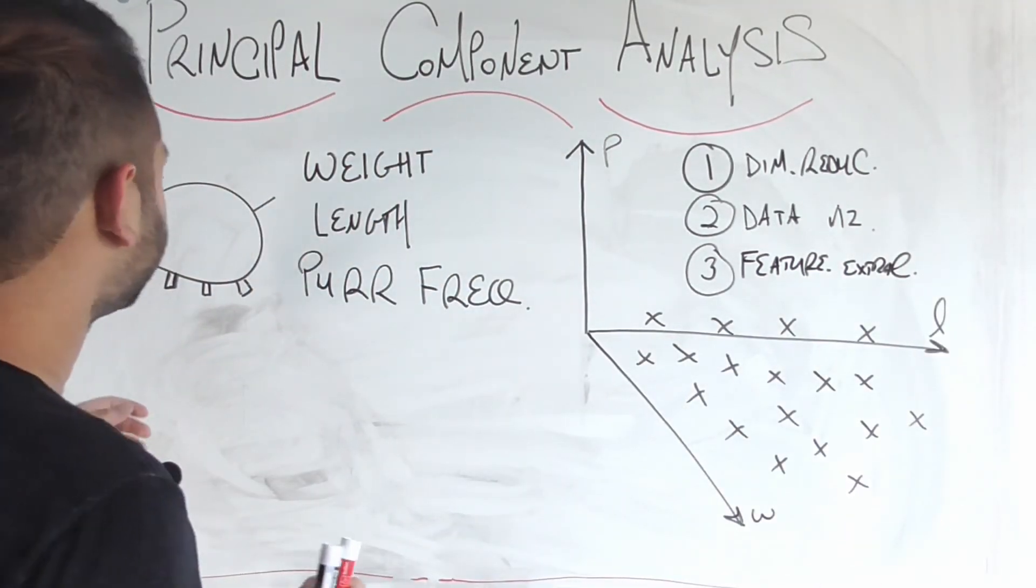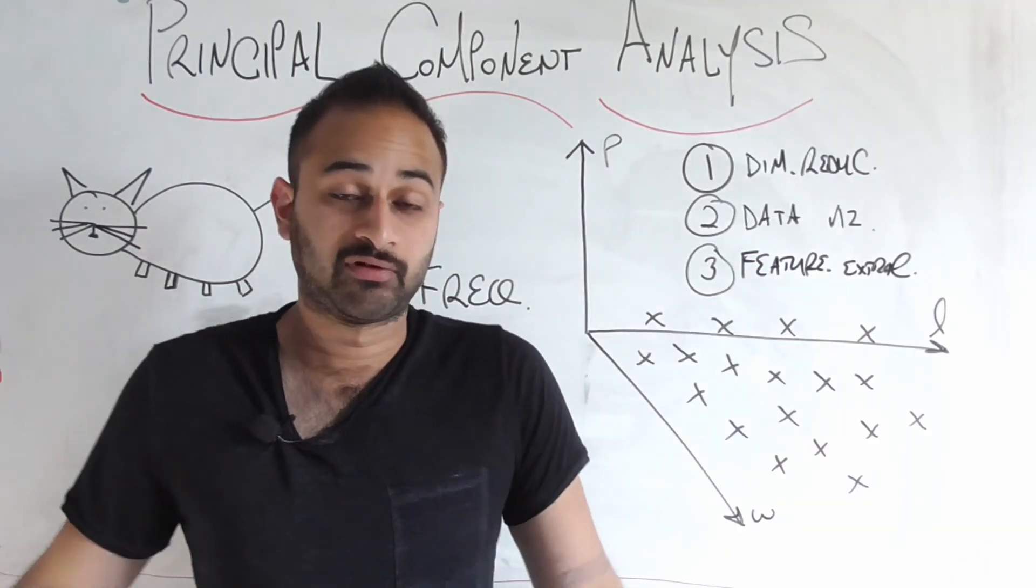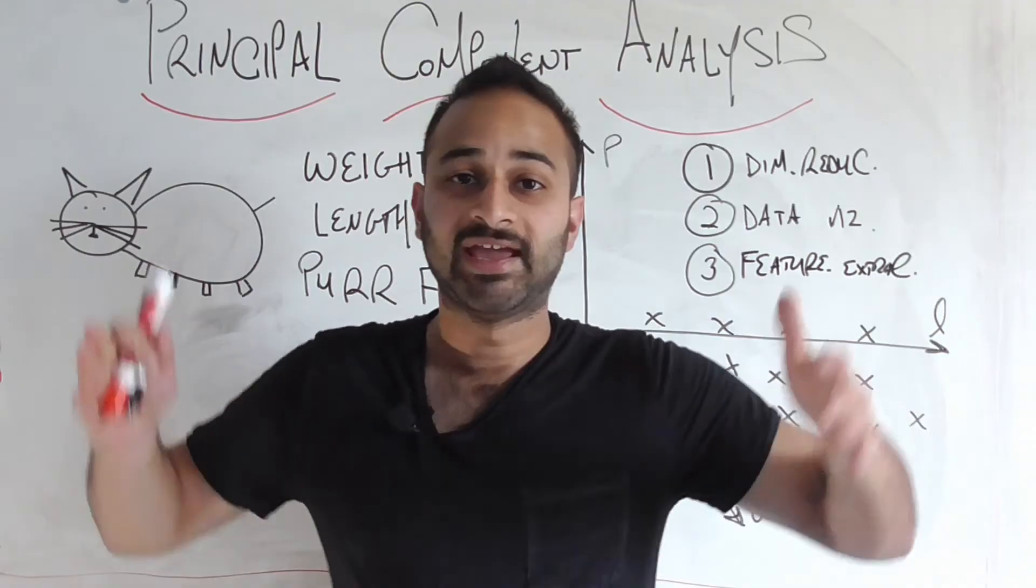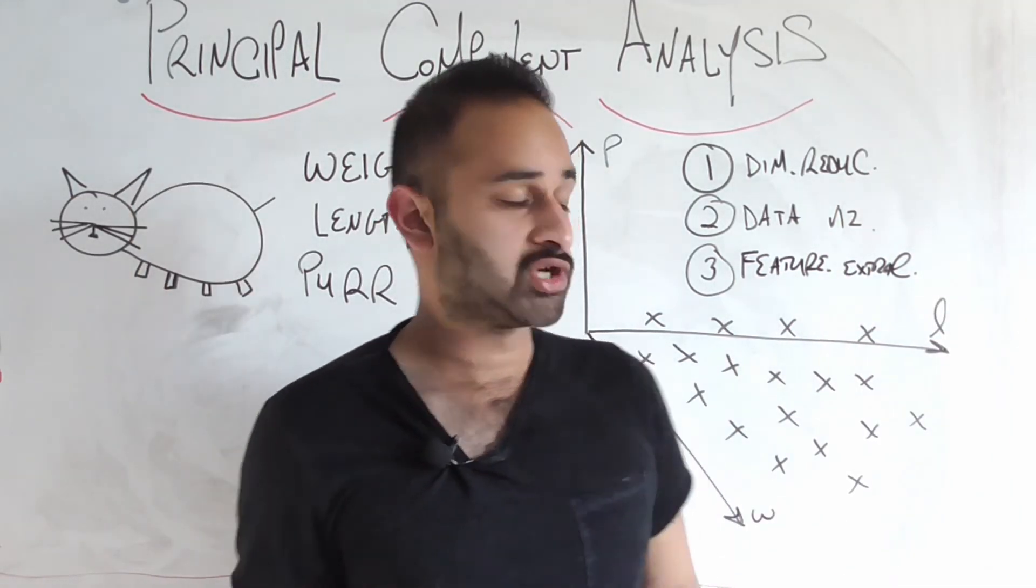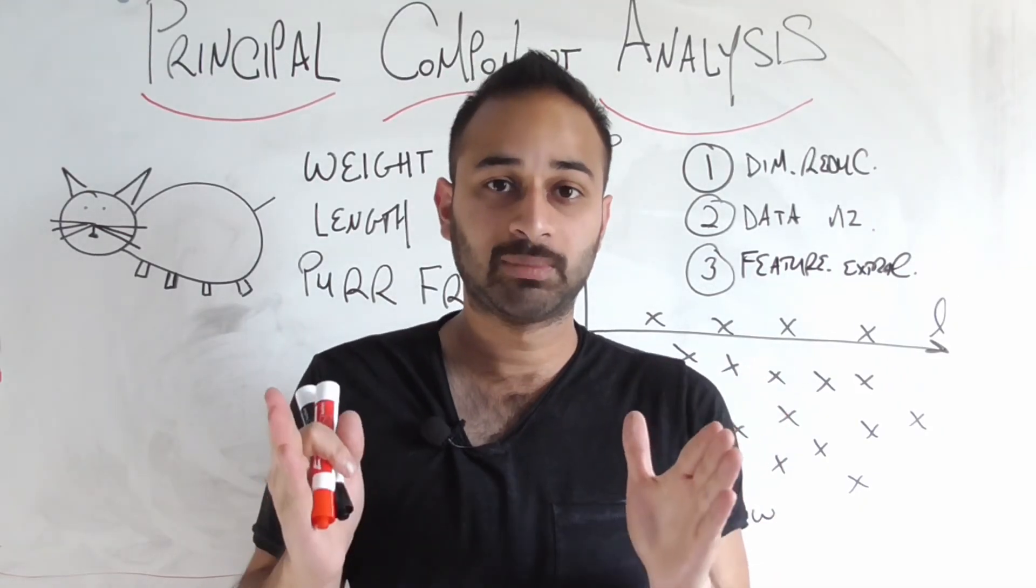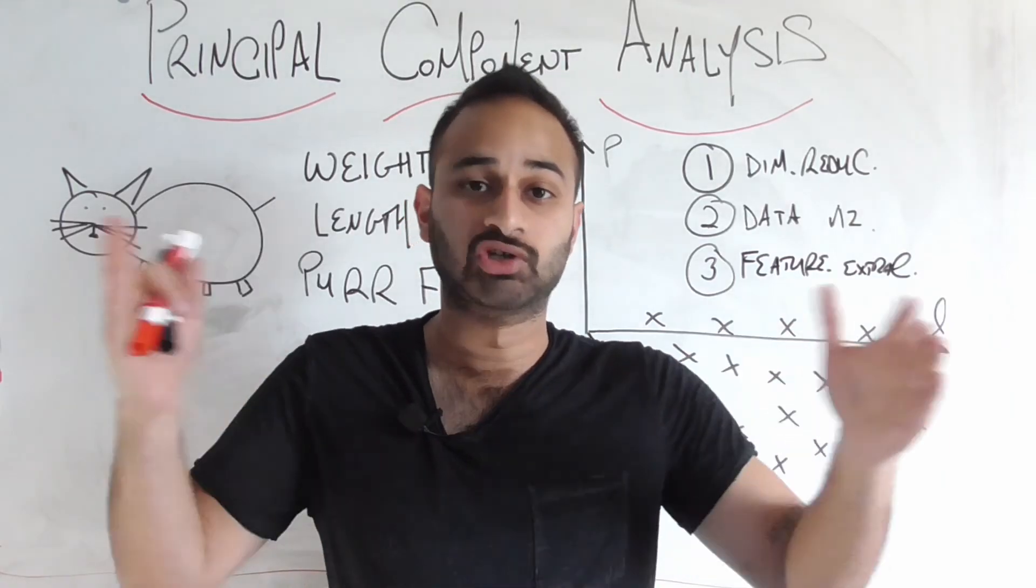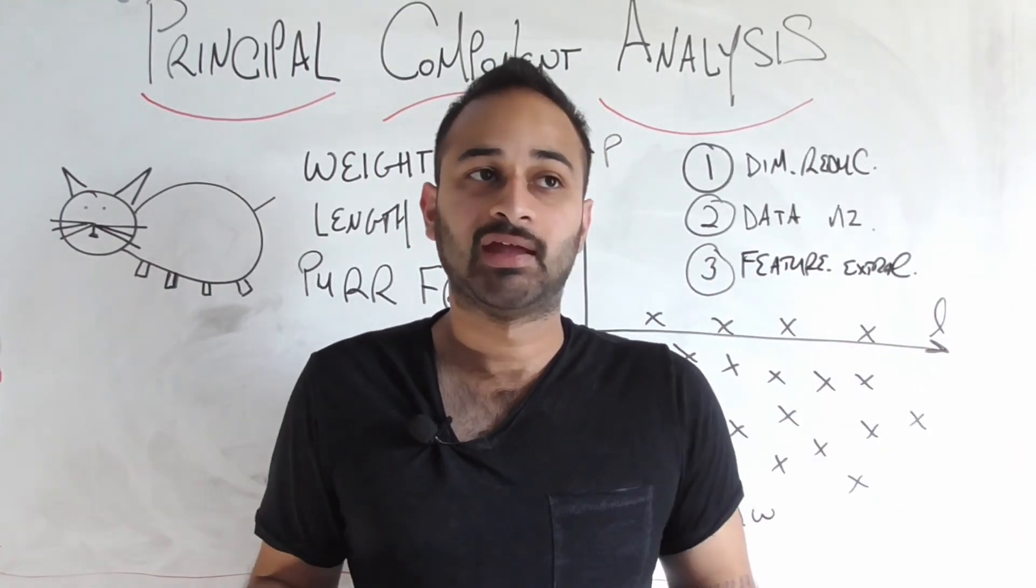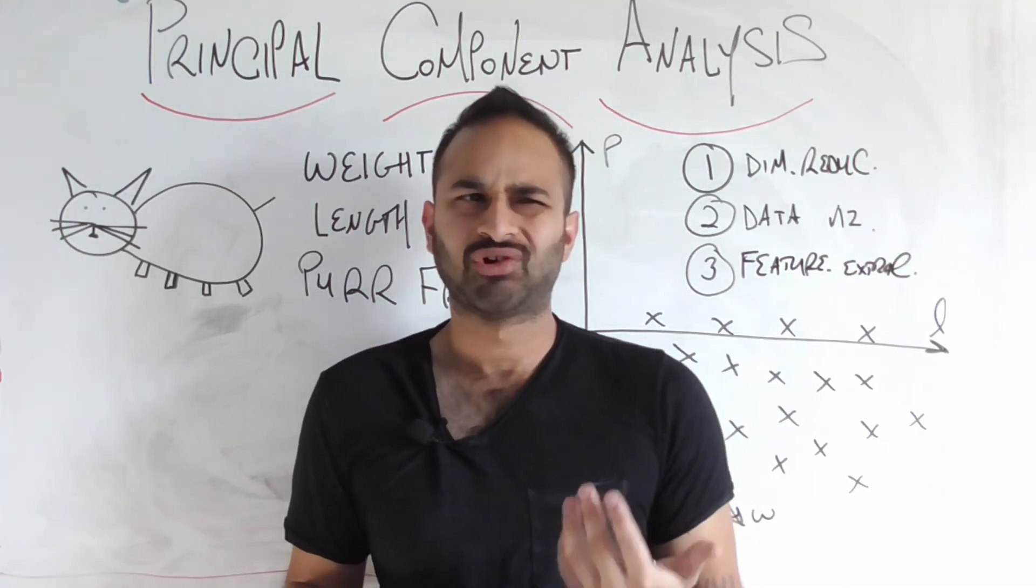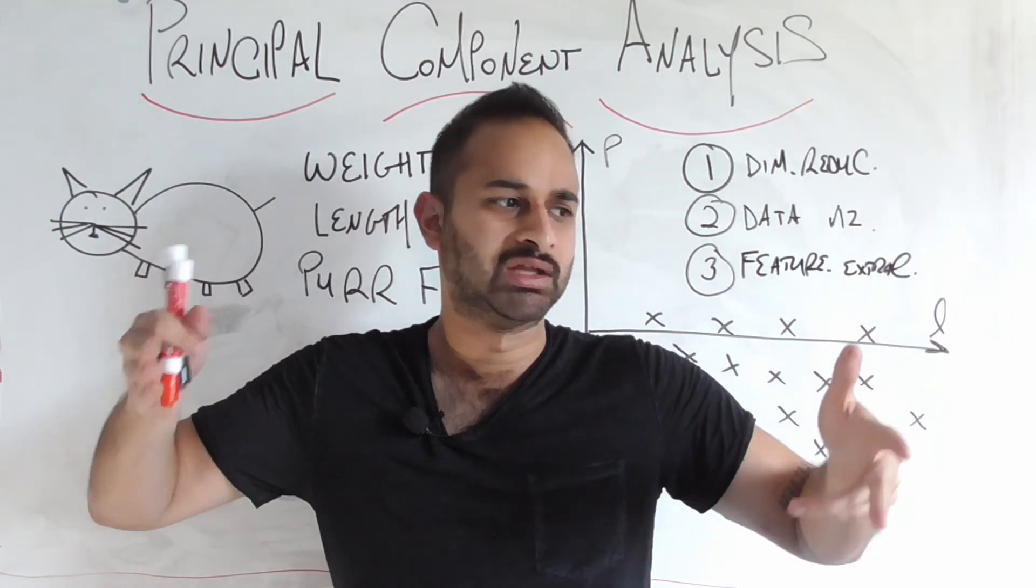So that's kind of the crux of what principal component analysis is. That's really it for this video. It takes a high dimensional space and applies various transformations onto it to get it to a lower dimensional space such that this lower dimensional space still captures as much of the dynamics in the original space as we can. And that transformation will be more clear in the next video when we talk about how do we actually go about transforming a high dimensional space into a lower dimensional space.